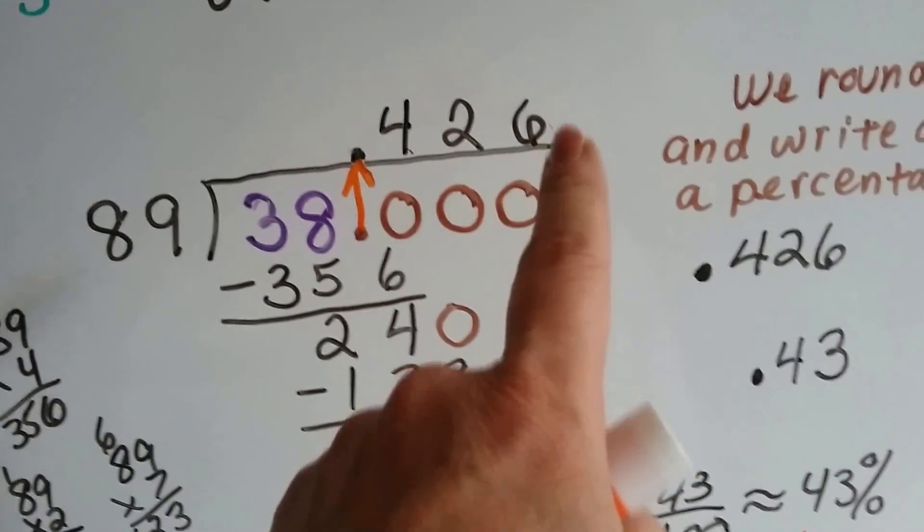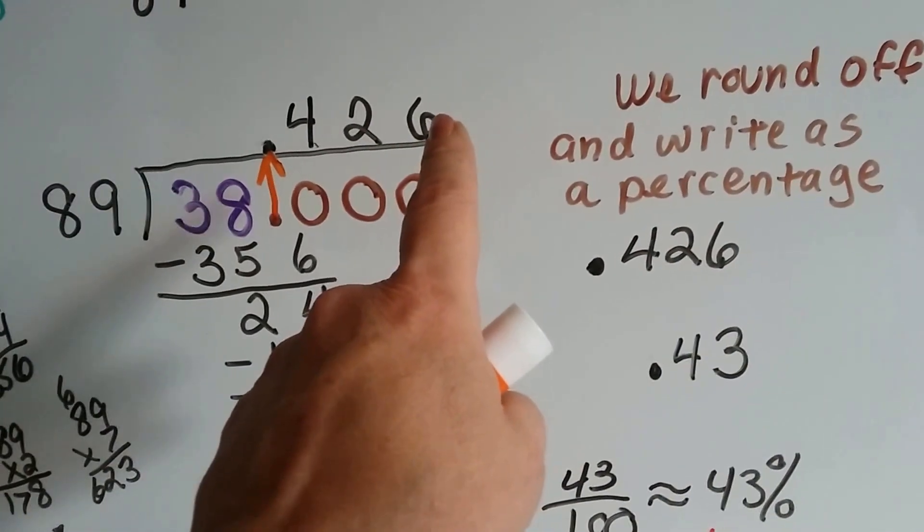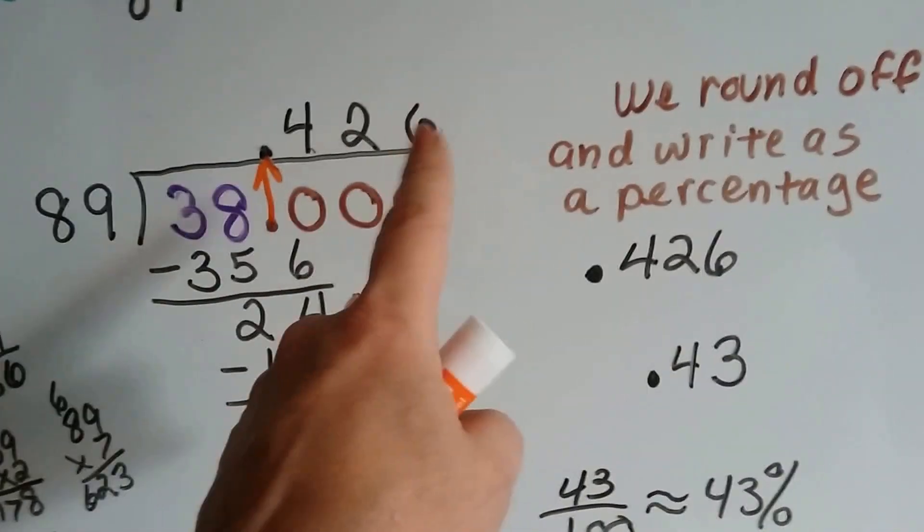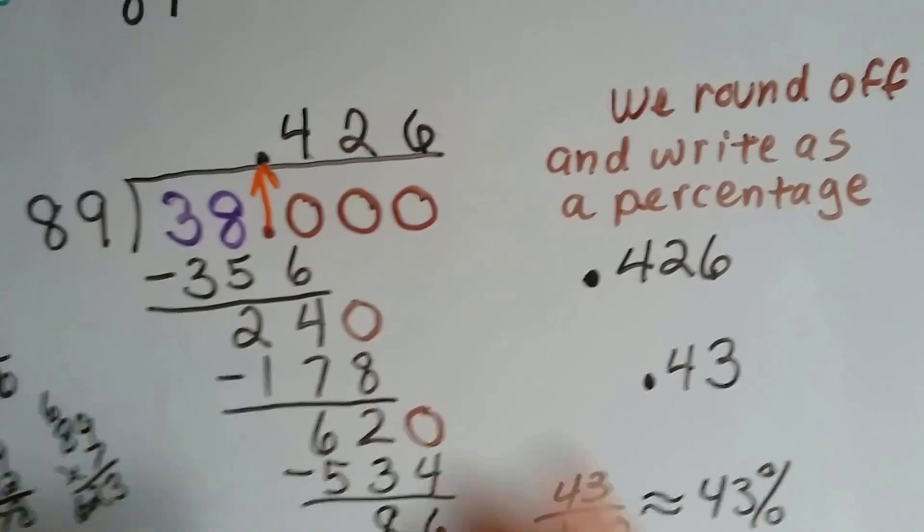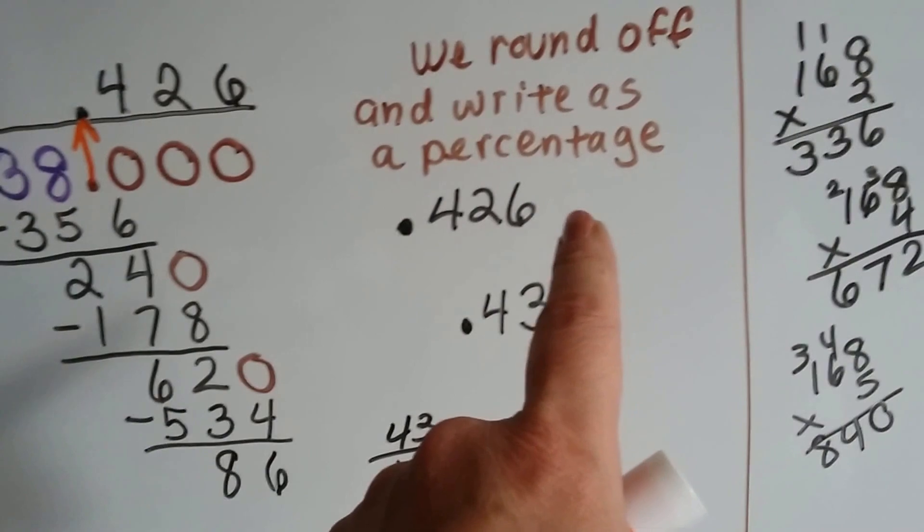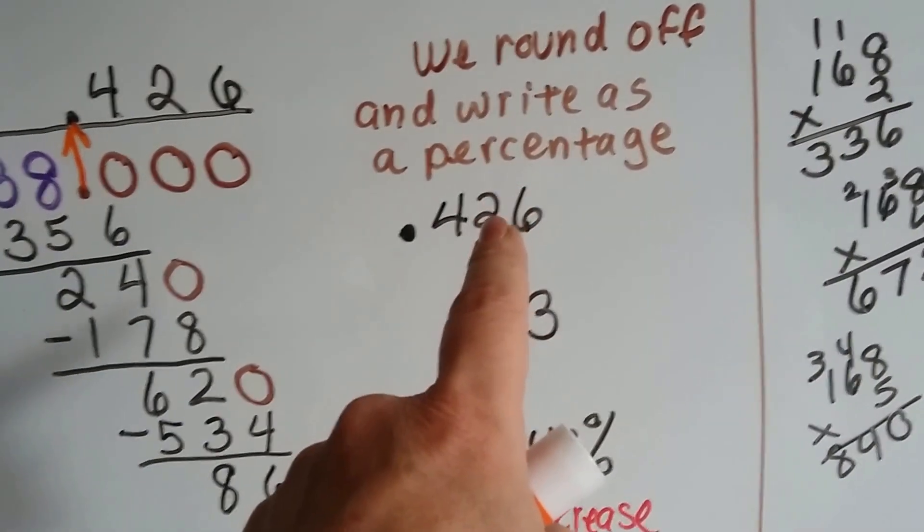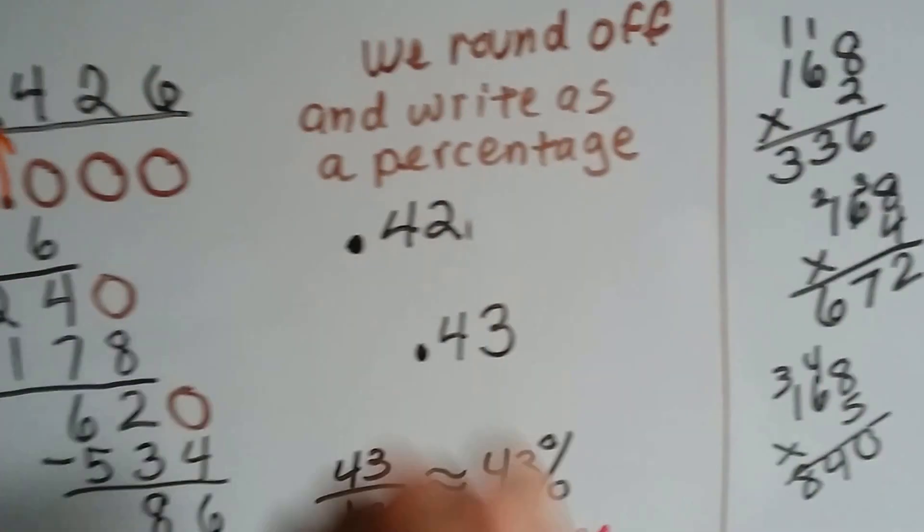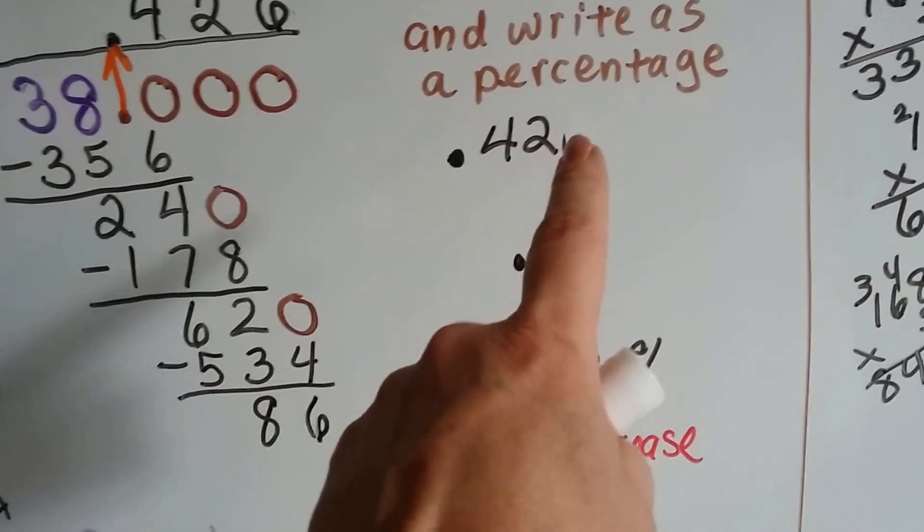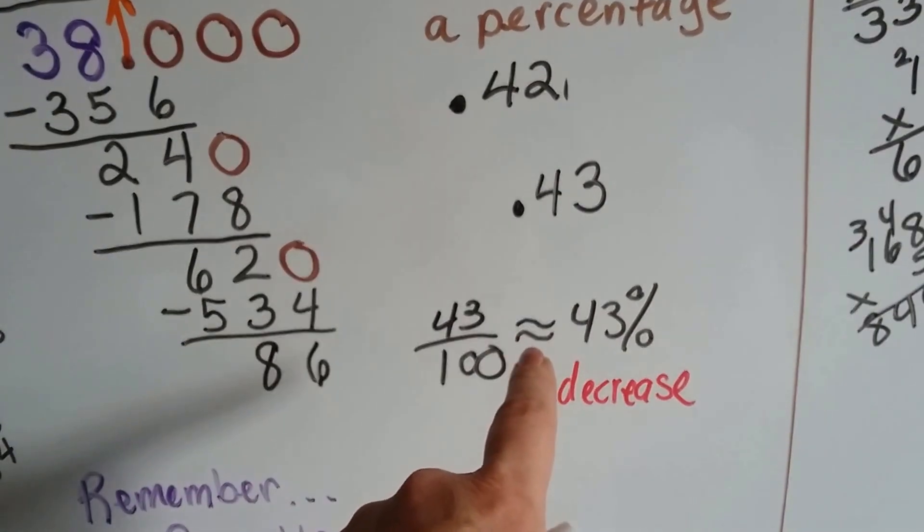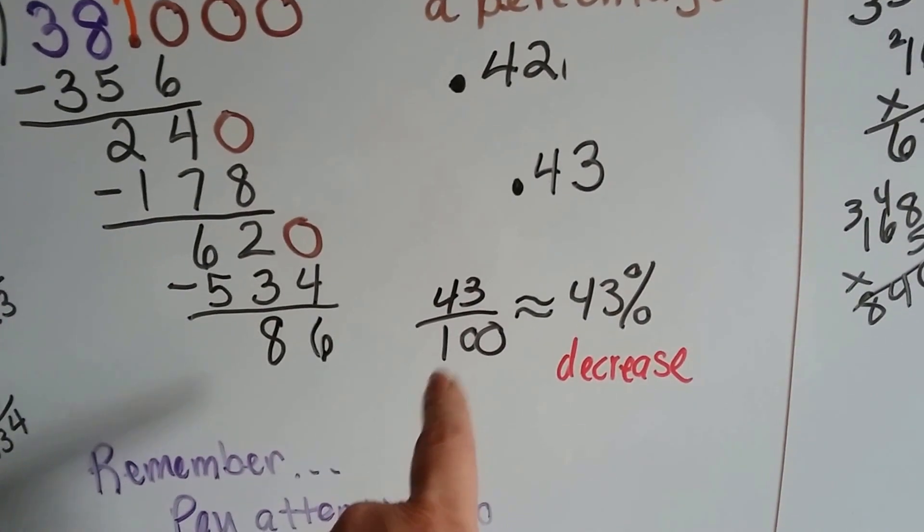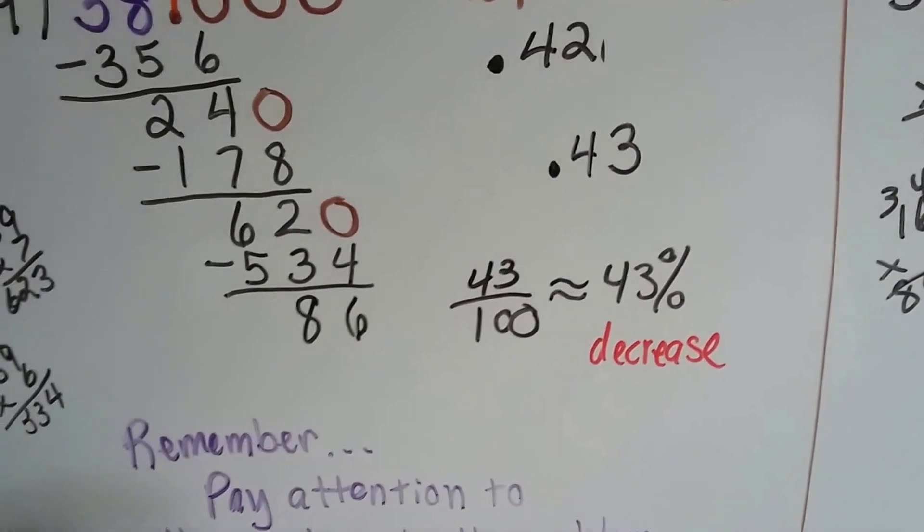We got a .426. And we needed to go to this third one because we saw that the division kept going and we need to round this number. We can't round this number unless we've got a third number to round that one to. So now we've got .426, we've got to round it off and write it as a percentage. The 6 tells the 2 to become a 3, and then when his job is done, he goes away. So now it's a .43. But it's not an exact .43 because we had a 6 there, so we have to use an approximation sign instead of an equal sign. .43 means 43 hundredths. So our answer is 43% decrease.